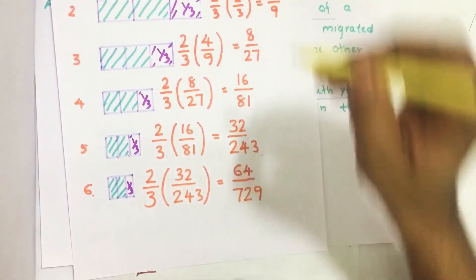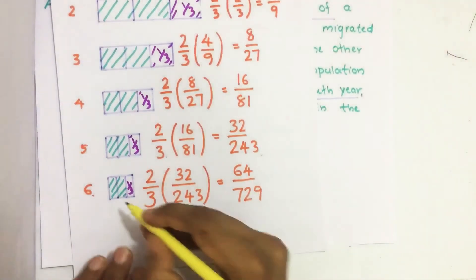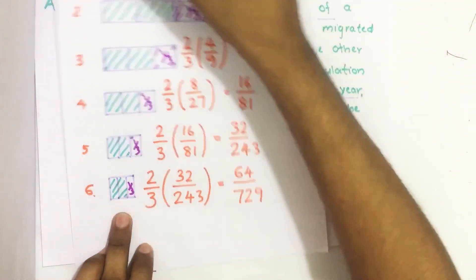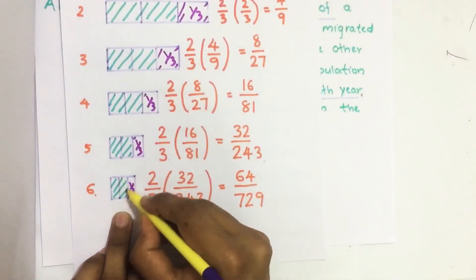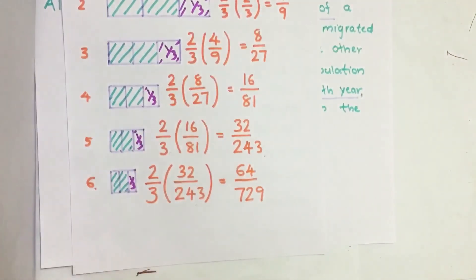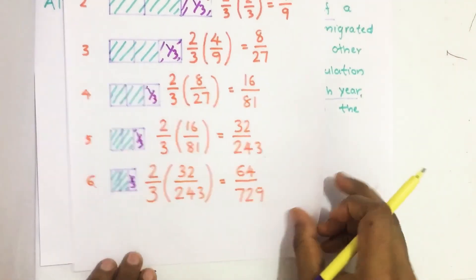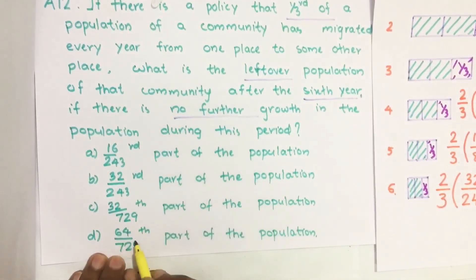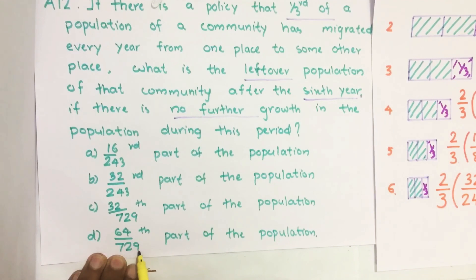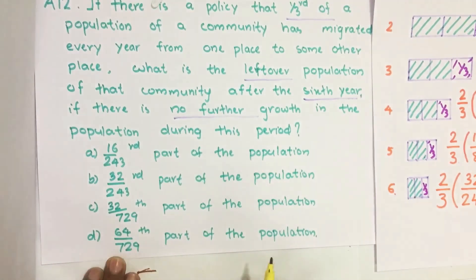That means the population is reduced to this fraction of the initial population. So our answer is option D: sixty-four divided by seven twenty-nine part of the population.